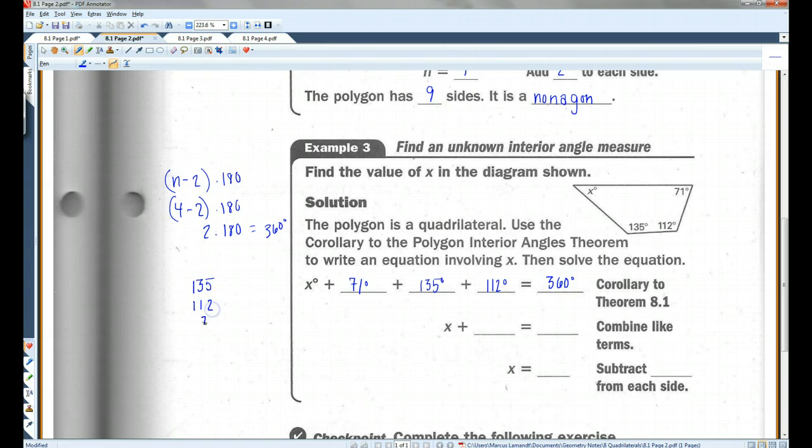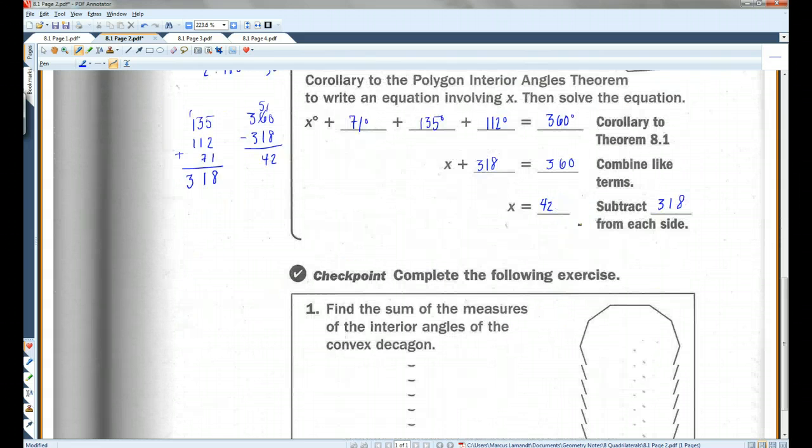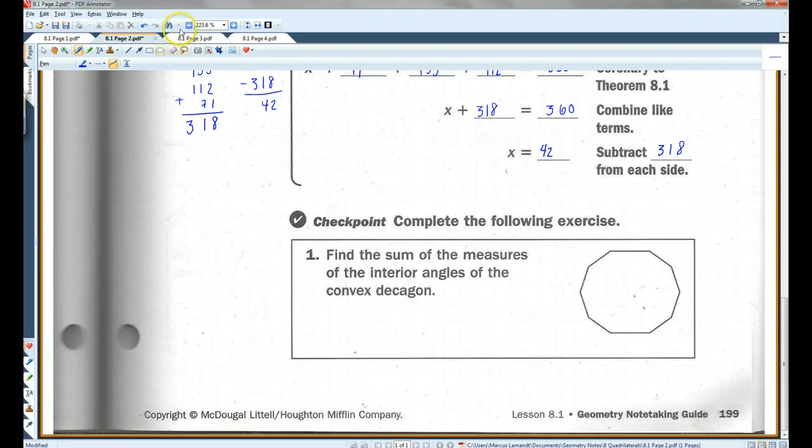135, 112, 71, and that would be 8, 11, 318. So x plus 318 equals 360. I'm going to subtract 318 from both sides. 360 minus 318. Need to borrow. 42. So x equals 42, in this case 42 degrees. All right, I'll let you guys do the checkpoint. Let's go on to page 3.